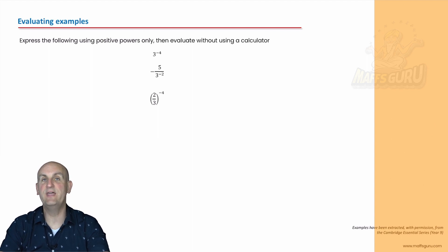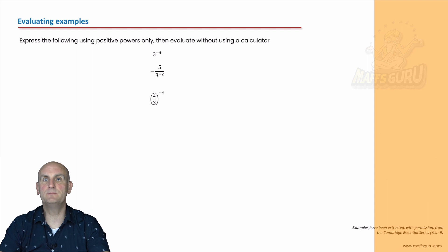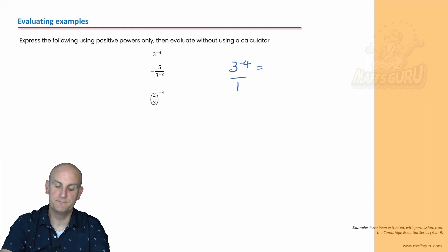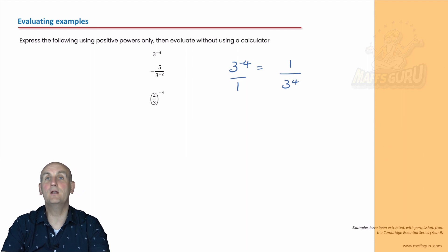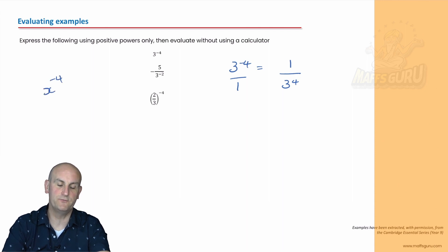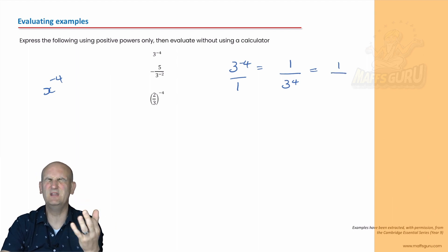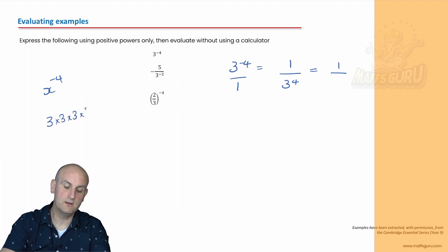Express the following using positive powers and then evaluate — evaluate means write down the value. Three to the power of minus four: that's the same as a fraction. The minus four is on the numerator — move it to the denominator, so that becomes one on three to the power of four. That minus four belongs to the three — it all moves under. So that becomes one over three times three times three times three. Three threes are nine, nine times nine is 81. So the answer is one over 81.